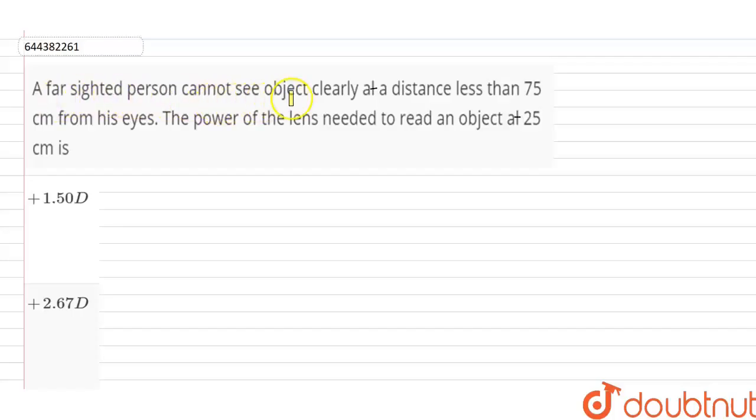A far-sighted person cannot see object clearly at a distance less than 75 cm from his eyes. The power of the lens needed to read an object at 25 cm is: We are given that normal near point u equals minus 25 cm and defective near point v equals minus 75 cm, and we have to find the power of the lens.